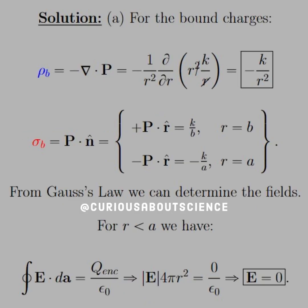To start the solution, we need to find the bound charges. We know that the volume bound charge is the negative divergence of the polarization, so we take the divergence in spherical coordinates and we see that the R's cancel, leaving us with the derivative of RK, which is just K. Therefore, the bound charge is negative K over R squared.